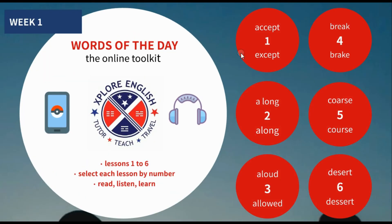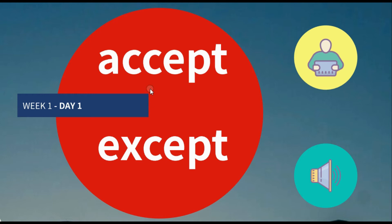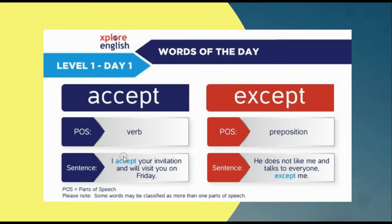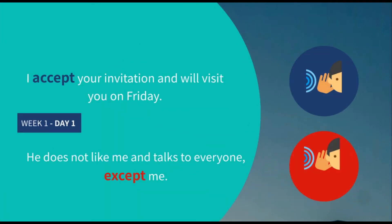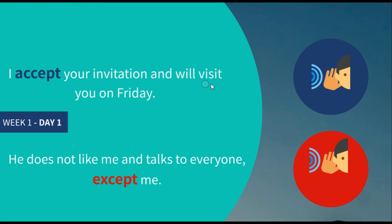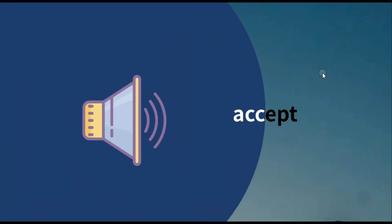As you can see with week one, we have all the words here in the red bubbles. So let's go to day number one. We've got our two words: accept and except. We're going to click on this, and as you will see, we have some parts of speech, the sentences, the words themselves. And then we go to the audio section, where you can actually listen to the sentences being read and the words being pronounced.